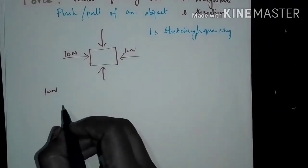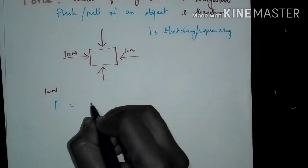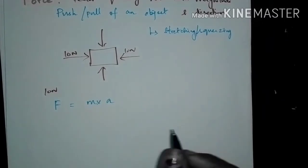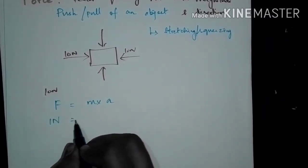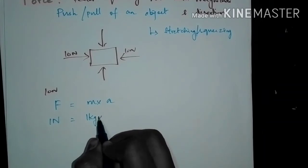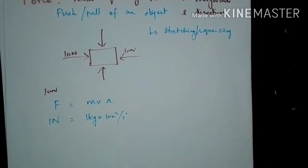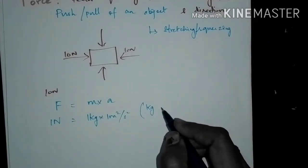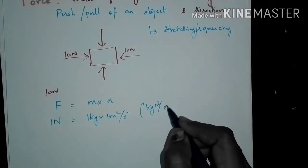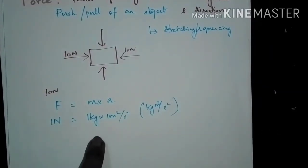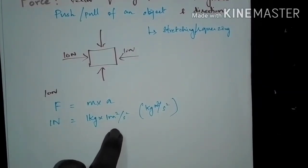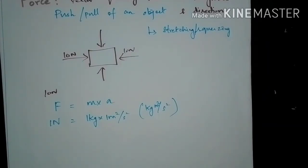Force can be represented by the equation F = mass × acceleration. One Newton of force is defined as 1 kilogram of mass accelerated at 1 meter per second squared. The unit of force is Newton, which is also a derived unit with units of kilogram·meter per second squared. Force applied on an object can also interact with other objects, and there are different types of forces.